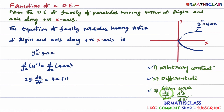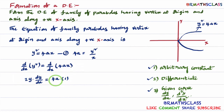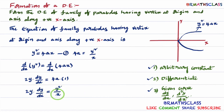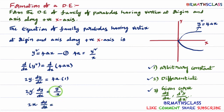We use the given curve to find 4a. From y² = 4ax, we get 4a = y²/x. So substituting in 2y·(dy/dx) = 4a, we write 2y·(dy/dx) = y²/x. No arbitrary constant remains. Simplifying: one y on the left and one y on the right cancel, and taking x to the left side, we get 2x·(dy/dx) = y. This is the required differential equation.